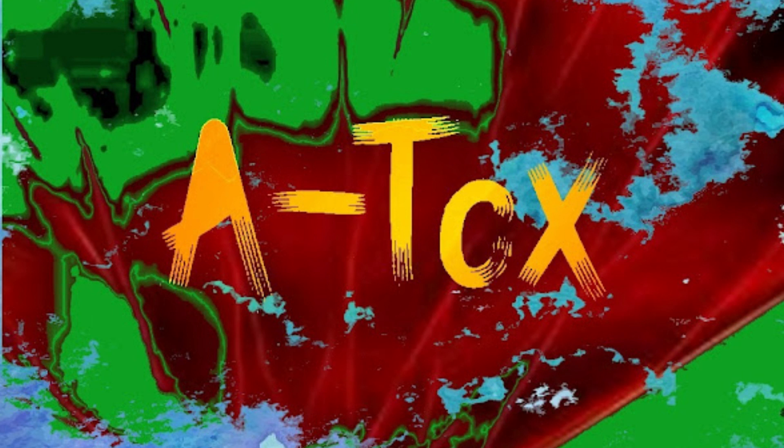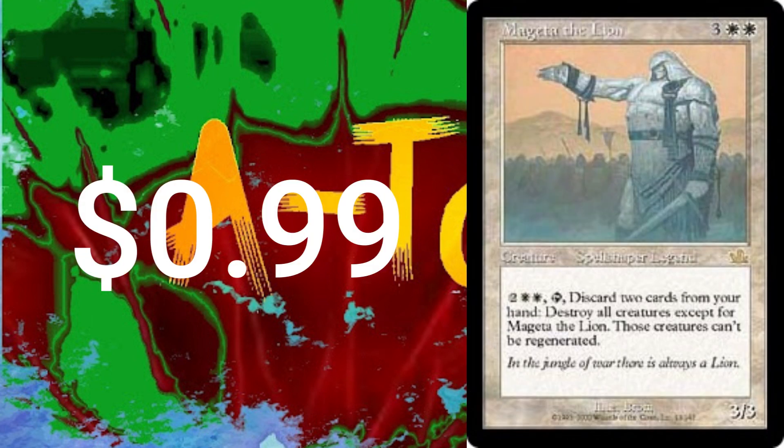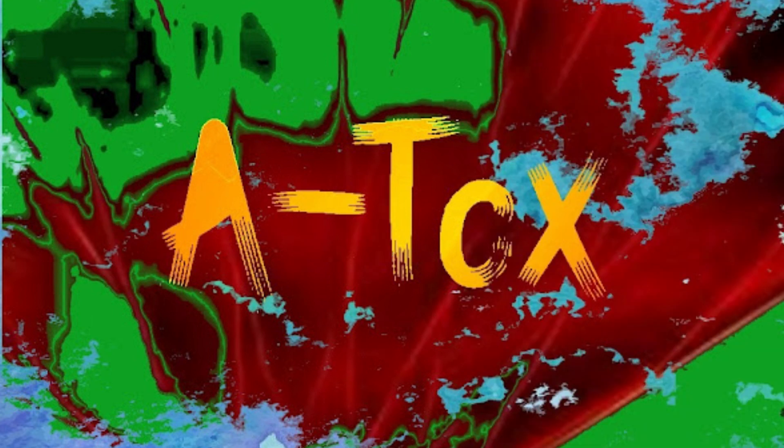Today I am doing a deck called Unleash the Beast with Mageta the Lion as the commander. Mageta the Lion is three double white for a creature spell shaper legend. This is from Prophecy, so we're going old school today. It's a 3/3. Two double white, tap to discard two cards from your hand, destroy all creatures except for Mageta the Lion. Those creatures can't be regenerated.